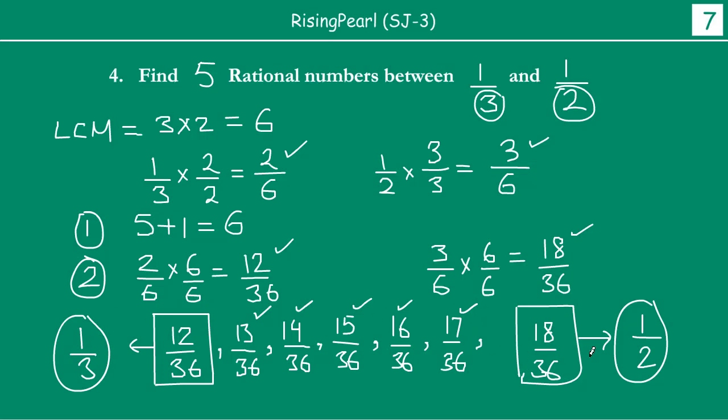Between 1/3 and 1/2, using the two-step technique, we found 5 rational numbers: 13/36, 14/36, 15/36, 16/36, and 17/36.